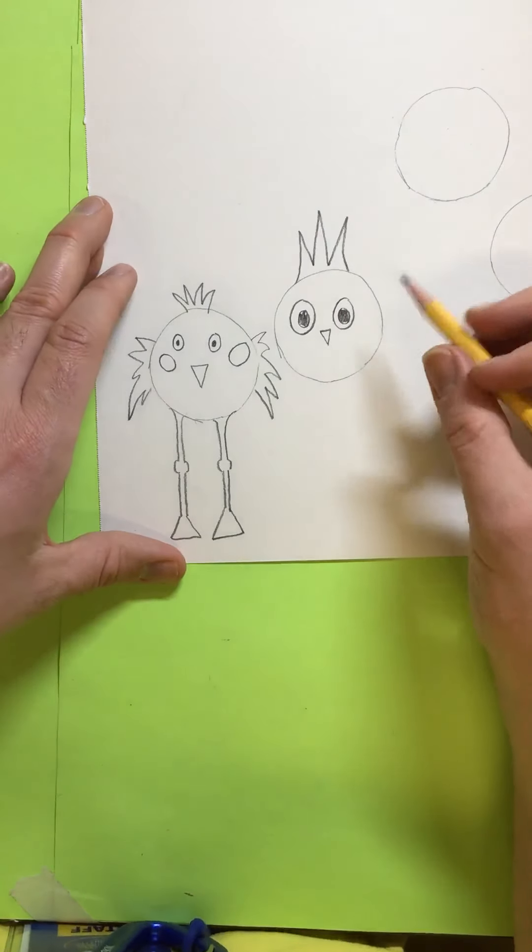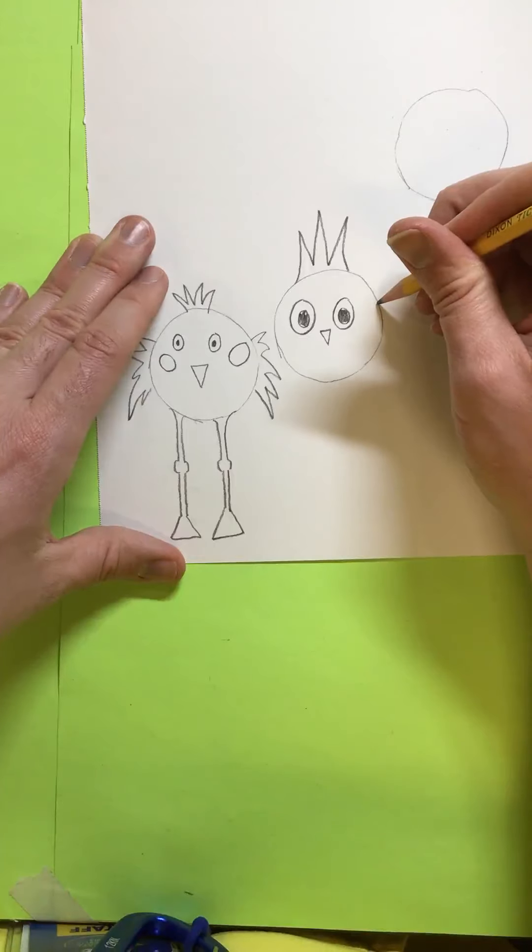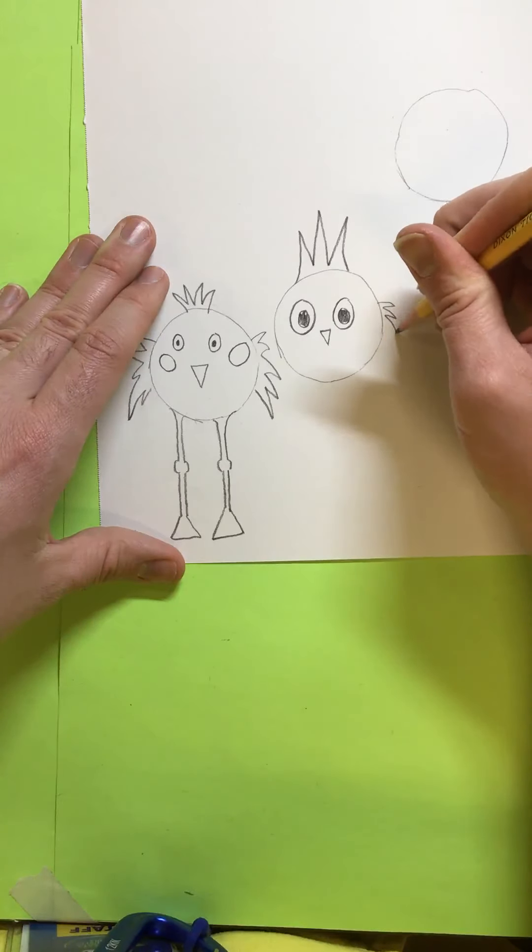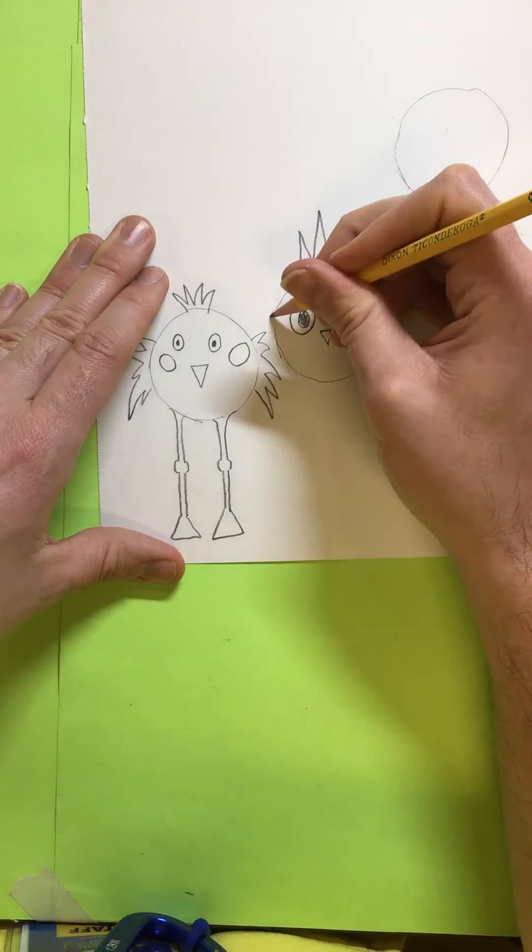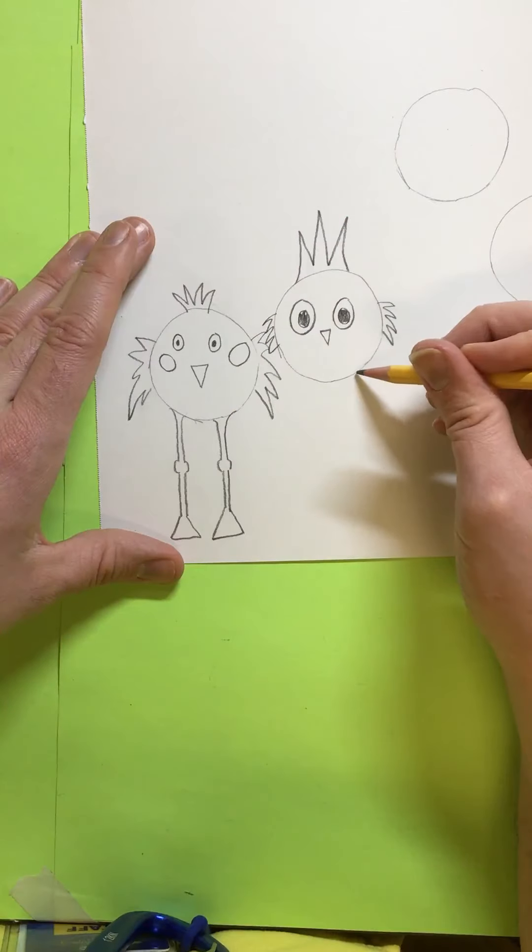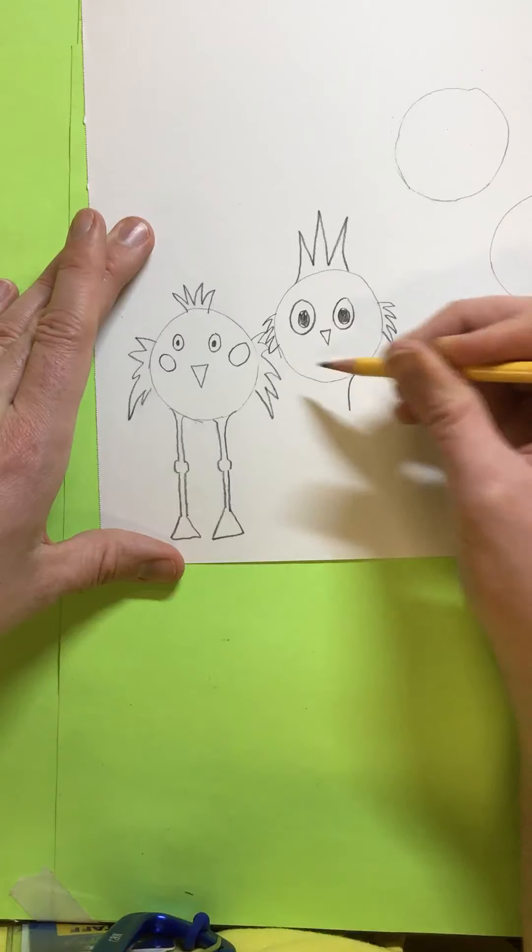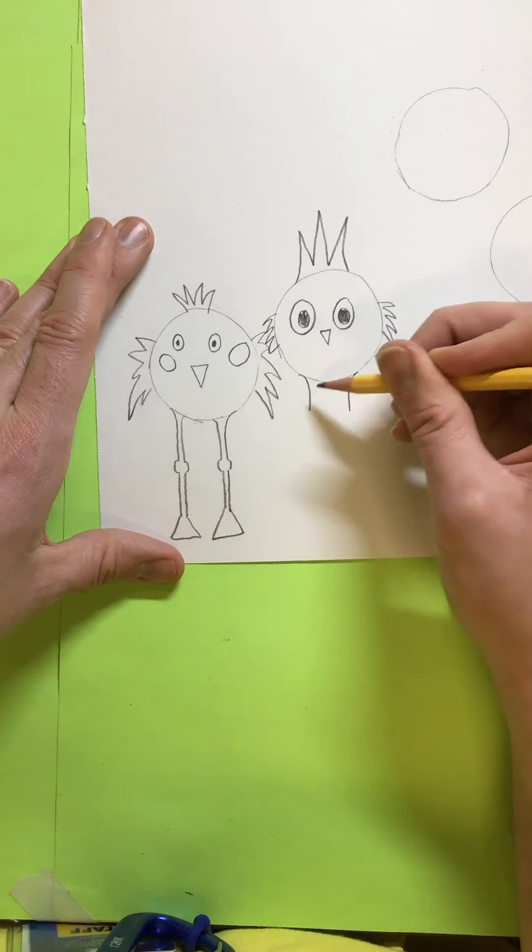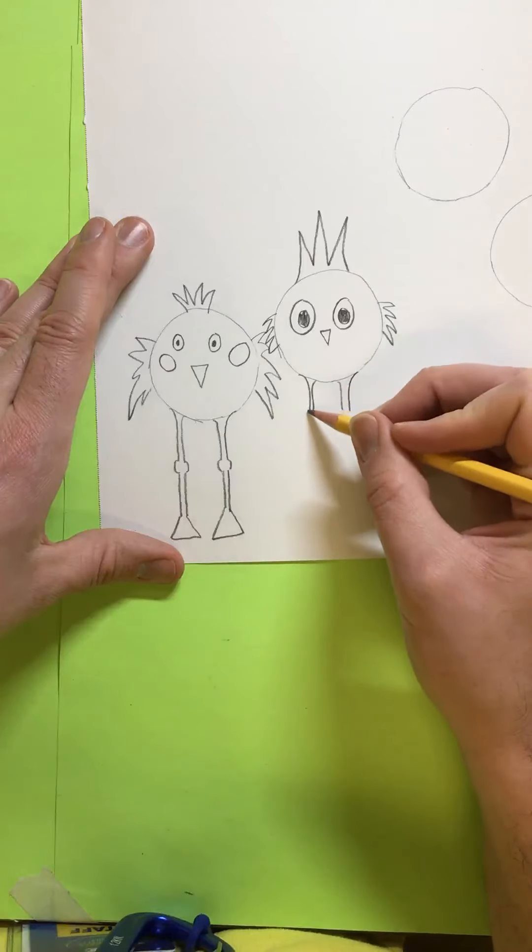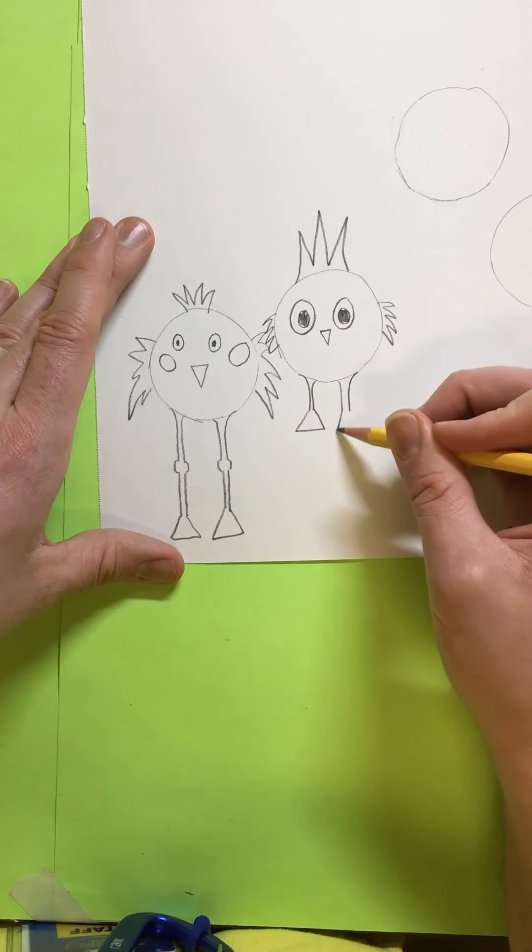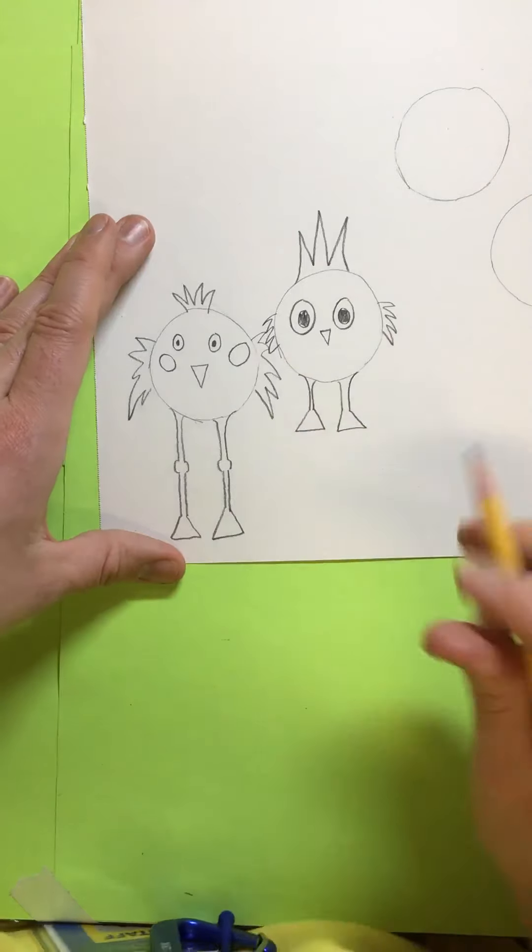And then, I think for this one, we'll give it little wings. And then we'll give this one, maybe we'll give this one short legs. There we go.